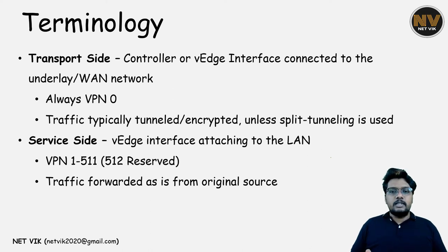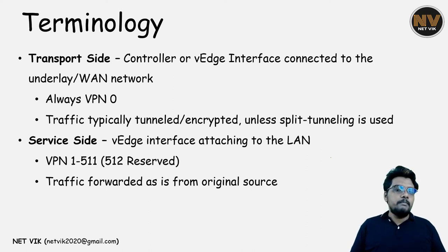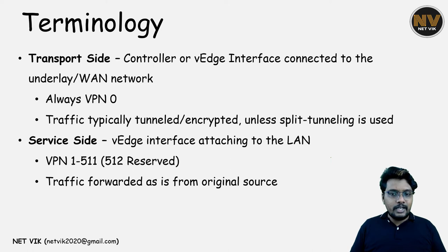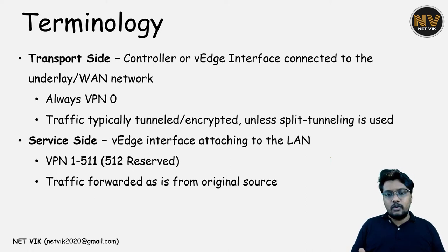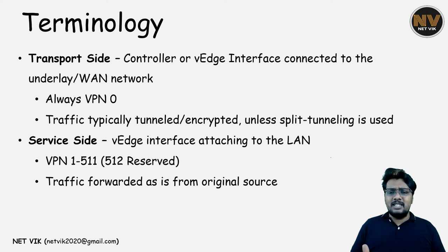Service VPN is the one connecting to the LAN side. The VPN numbering can range between 1 to 511, and 512 is reserved for OOB, just like VPN0 is reserved for the transport. In the service VPN, we will see the actual or original traffic from the LAN.